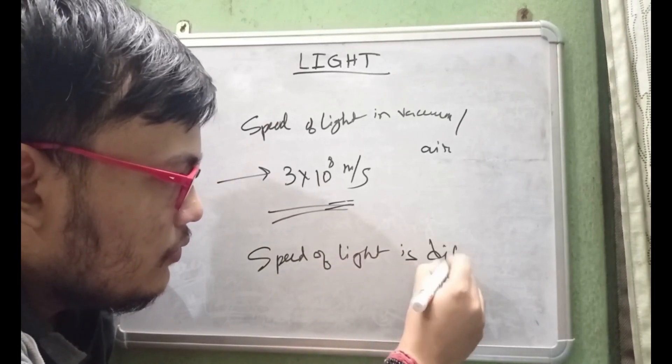When a light ray travels from a rarer to a denser medium it bends towards the normal. The angle of incidence will be much greater than the angle of refraction. This is the observation we see when light travels from a rarer to a denser medium.